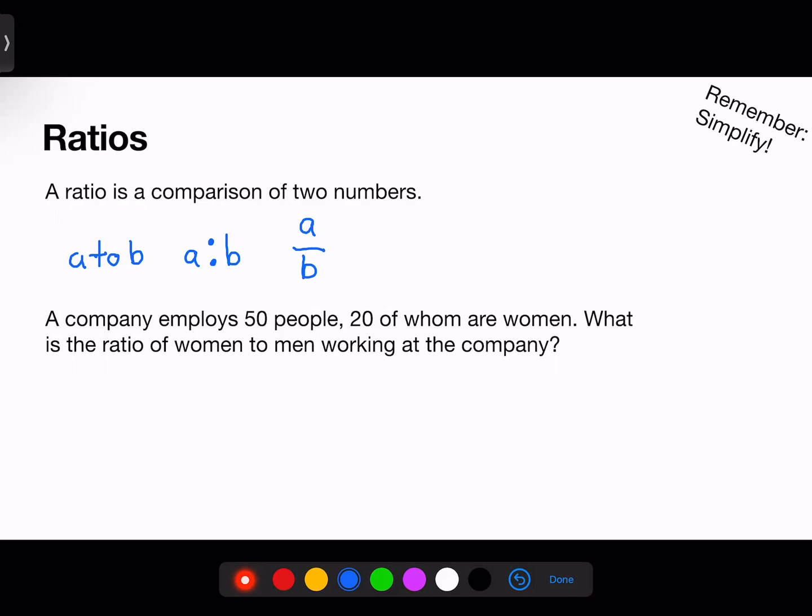The most important thing to note is what order the ratio is written in the problem: women to men. If we don't follow that order, we will get a backwards answer. The problem tells us how many women there are, 20. Assuming that every person who is not a woman is a man, we can subtract 20 women from the total. 50 minus 20 is 30.